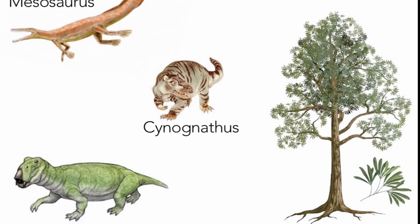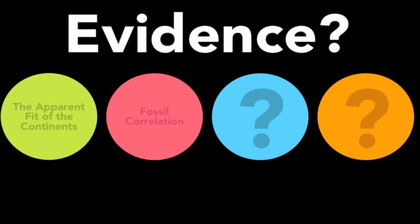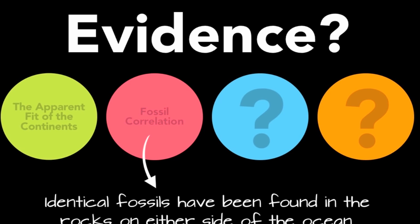Wegener found that there were other organisms that lived in the past that had similar fossil distributions — Sinonathus, Lystrosaurus, and Glossotaurus being amongst the more notable ones. These fossils all have very unique distribution patterns that suggest the continents were once together. If you reassemble the continents and map out the locations of these fossils, they line up perfectly. So that's our evidence number two: fossil correlation. Correlation simply means matching up — matching up fossils on either side of the ocean. Identical fossils have been found in the rocks on either side of the ocean, and therefore the continents were once connected and must have drifted apart.